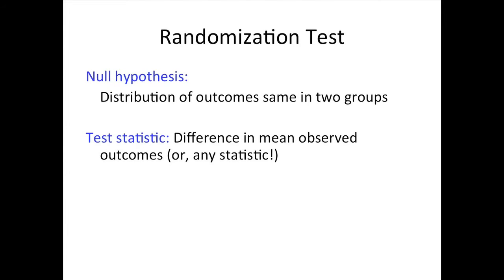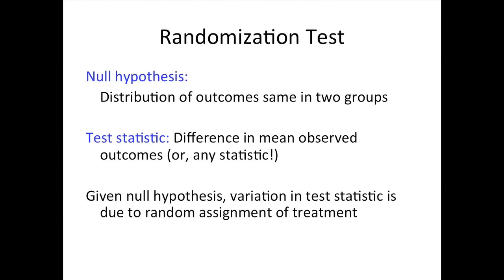The way we're going to frame this problem is to say: given the null hypothesis, assuming that the outcomes are the same in the two groups, assuming that it doesn't matter whether you're offered help from HLAB or not, assuming there's nothing real going on here — no difference — the variation in the difference in win rates is just random. And that's going to give us the randomization distribution of the test statistic.